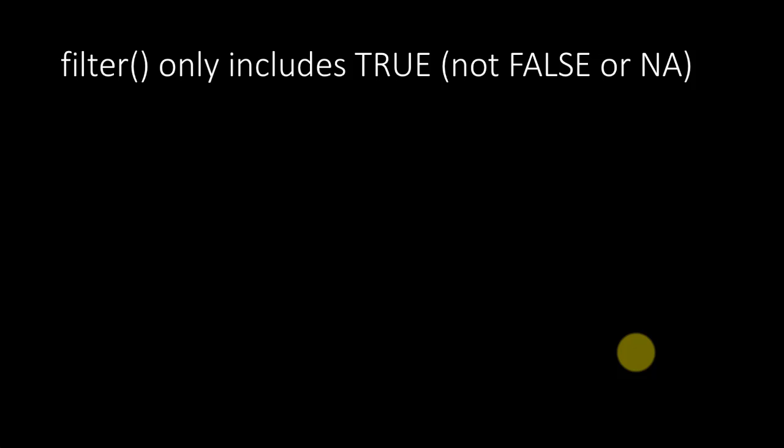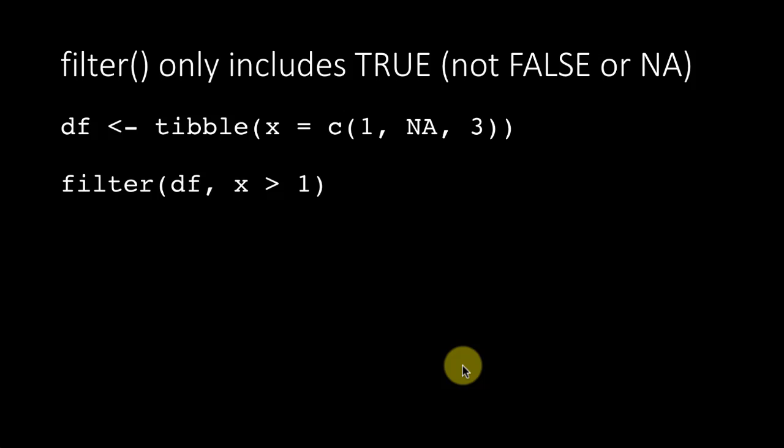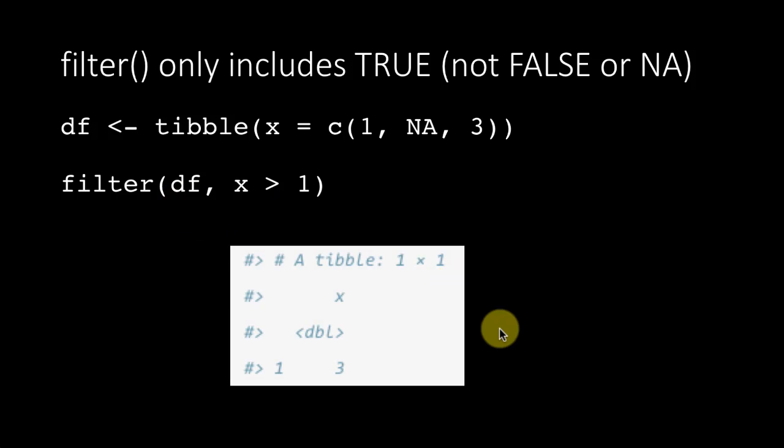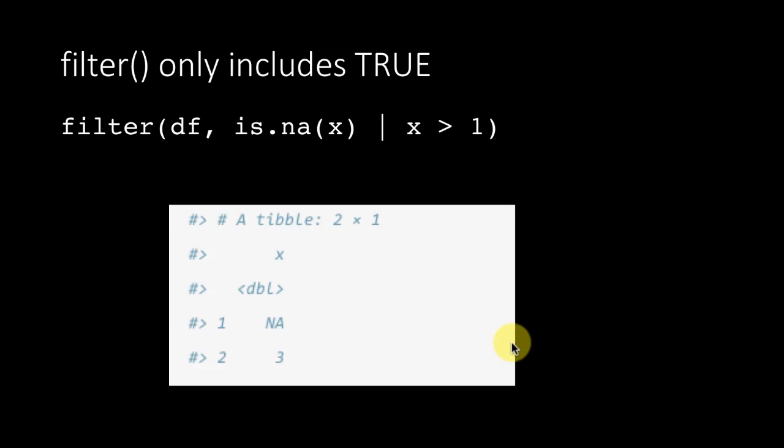So again, to reinforce the fact that filter only includes TRUE and not FALSE or NA. But suppose you say, well, I want to filter the rows for which the condition is TRUE and also for which the condition is NA. I want TRUE or NA. Of course you can do that using the or operator. Filter df, x greater than one, that gives you this. We've seen this. But if you say I want x greater than one but I also want NAs, you can use the is.na function.